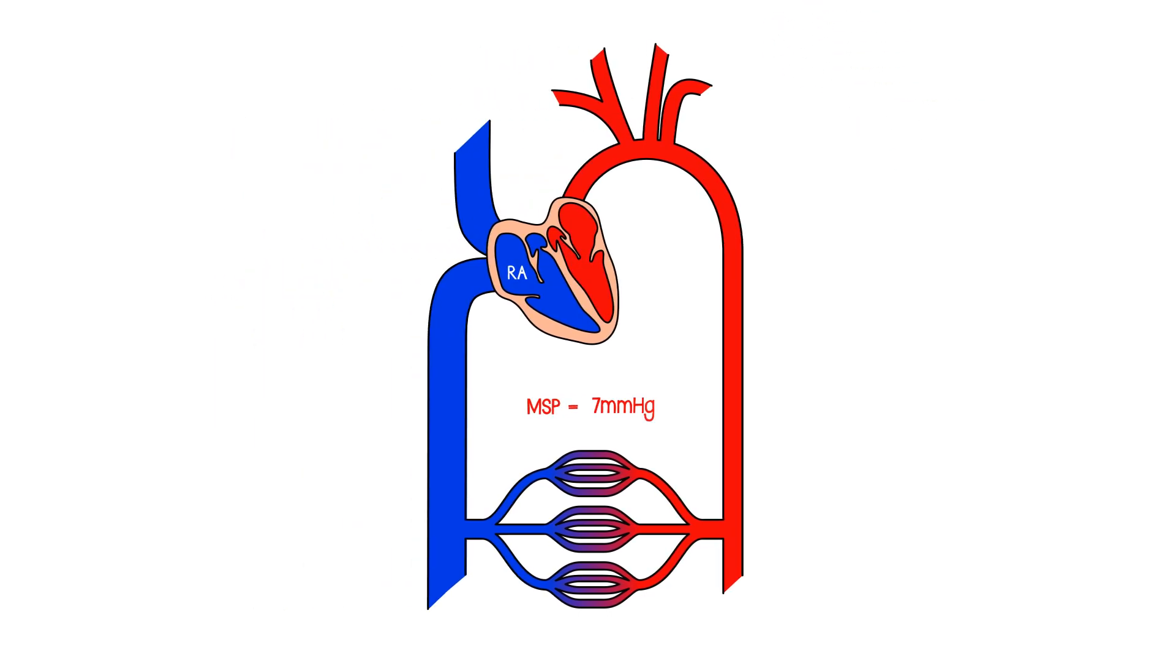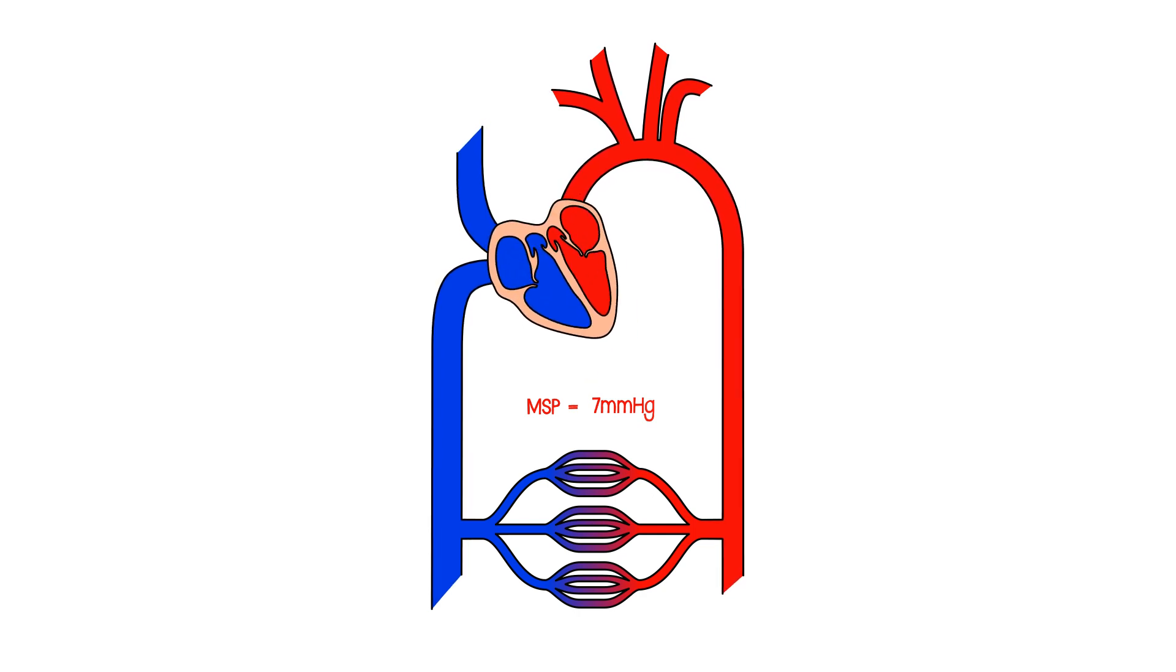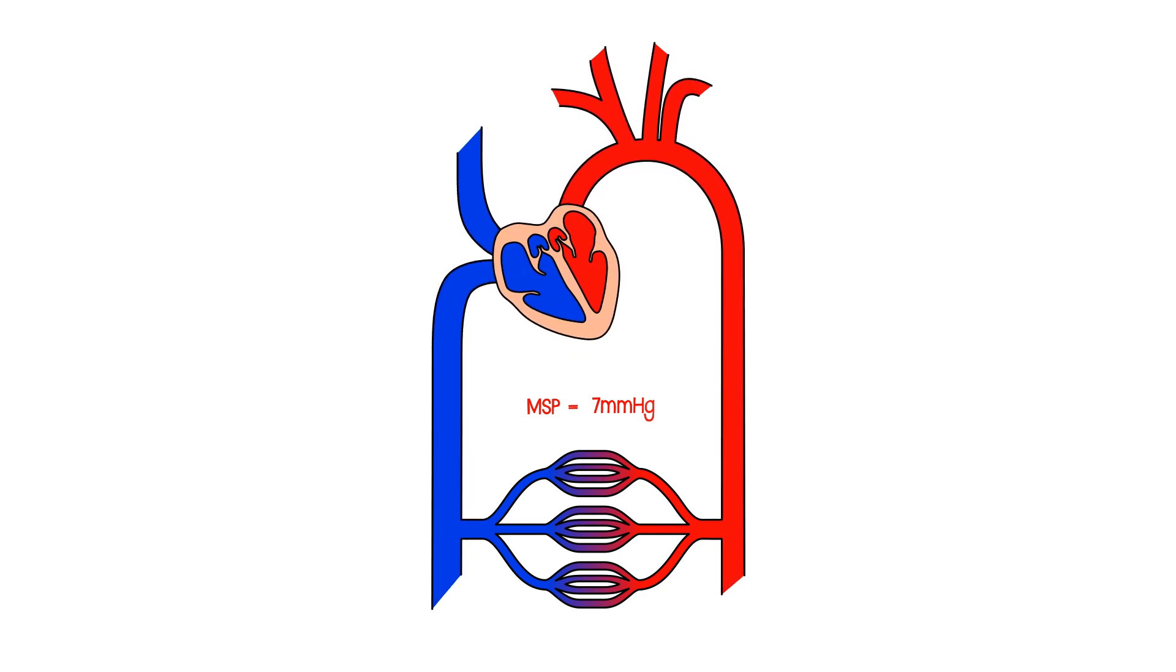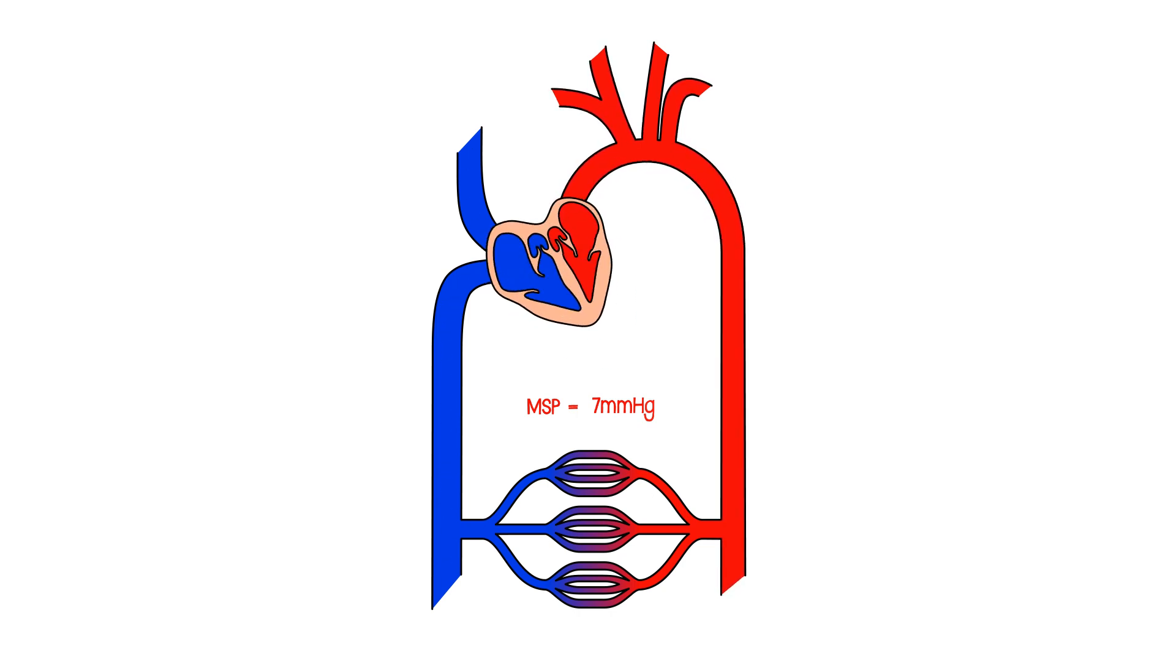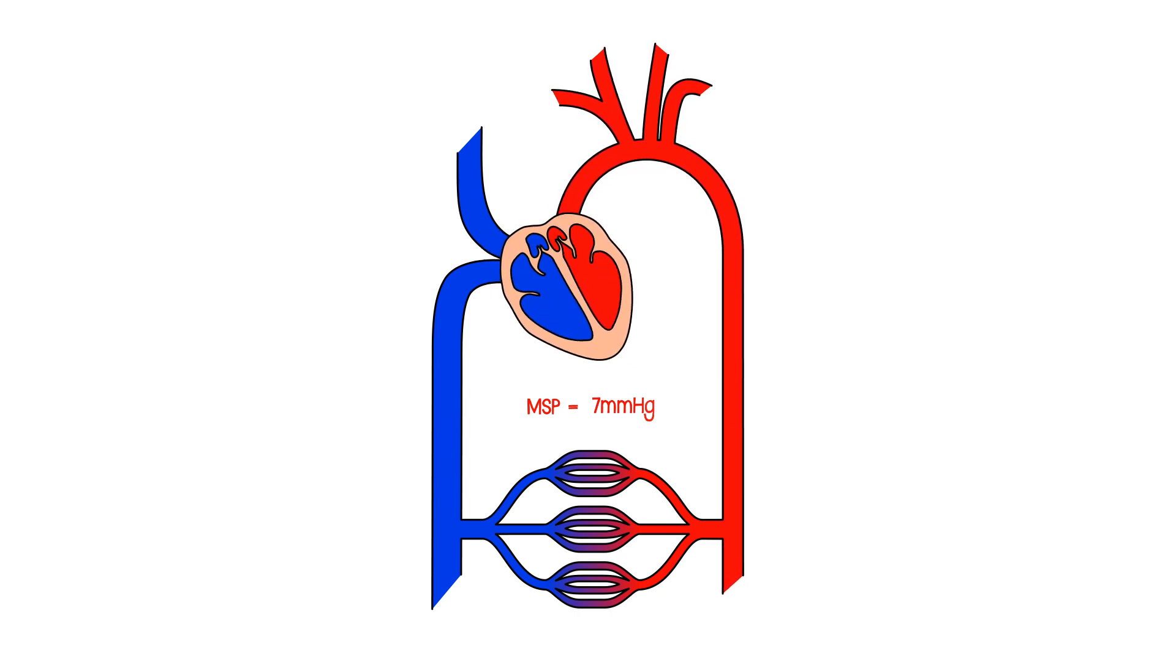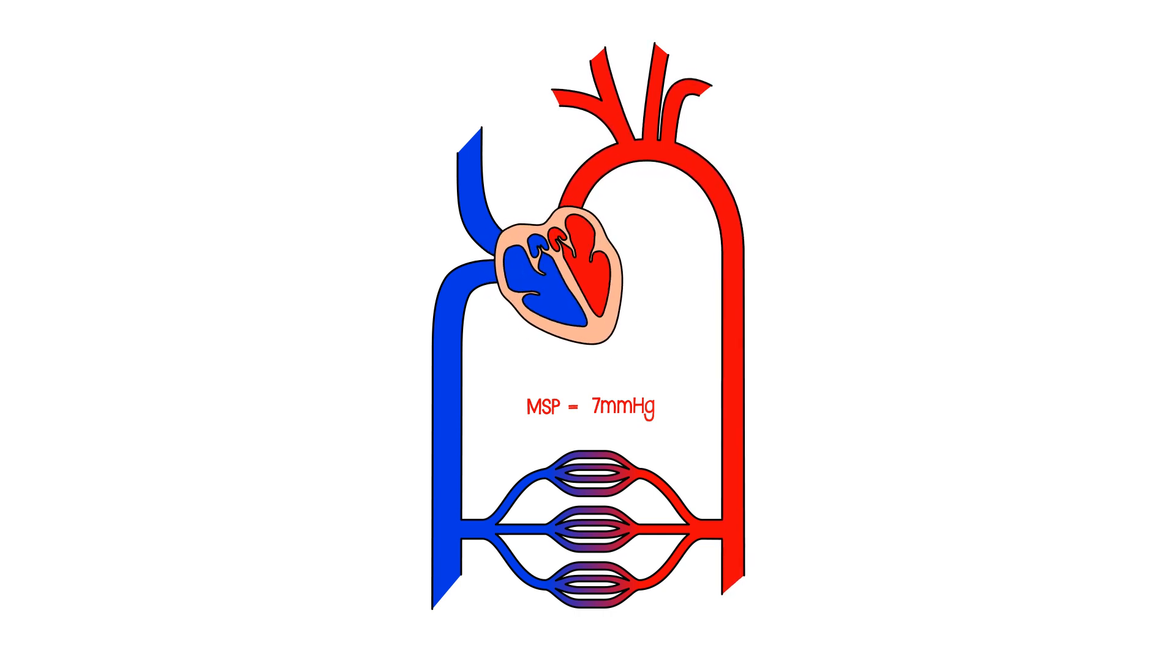Now let's imagine that the heart begins to pump now. Obviously that would never happen in reality, but let's imagine that the heart does begin to pump. And what will happen is that it will take some blood from the venous side and it will pump that blood into the arterial side. So we can imagine it's transferring, let's say, x milliliters of blood from the veins into the arteries.